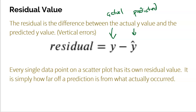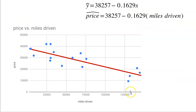Every single data point on a scatter plot has its own residual value because every dot represents an actual individual — in our case, an actual truck. The difference between that actual point and the line we use to predict it is the residual value. Here is a picture of that scatter plot, and I drew my linear regression model through it, and we can actually see that the residuals are those distances.